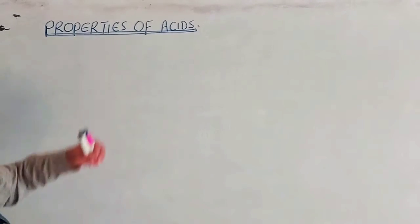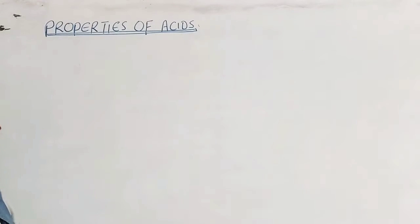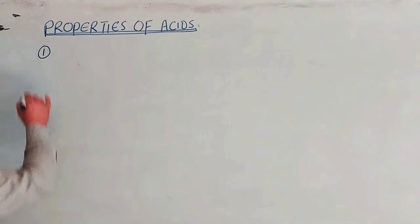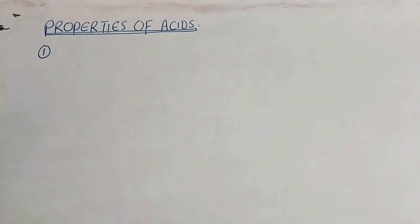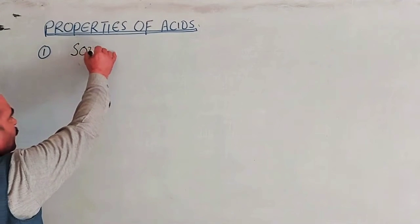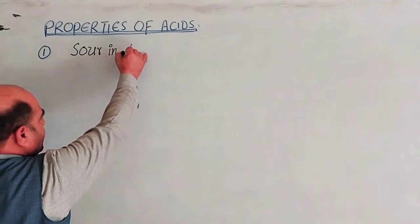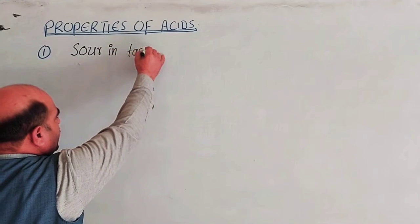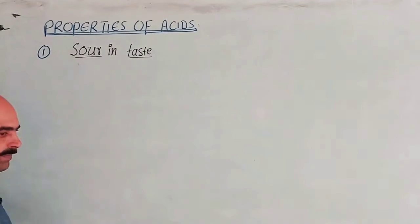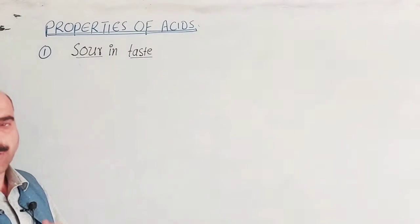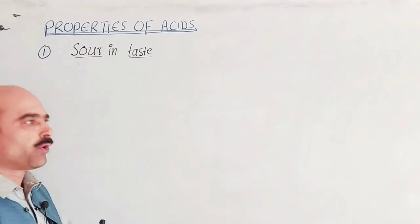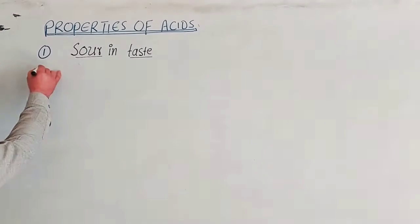The first property of acids is that they are sour in taste. Acids are sour in taste — in Pashto, we say 'turshi.' This is the first general property of acids.